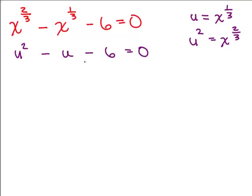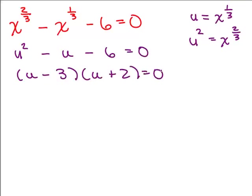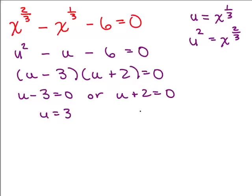Now this looks like a quadratic — that's why it was called quadratic in form. It's much easier to work with u squared minus u minus 6, so first we see if we can factor it, and we can. We get (u minus 3)(u plus 2) equals 0. Setting each factor equal to 0: u minus 3 equals 0 or u plus 2 equals 0. So u equals 3 or u equals negative 2.